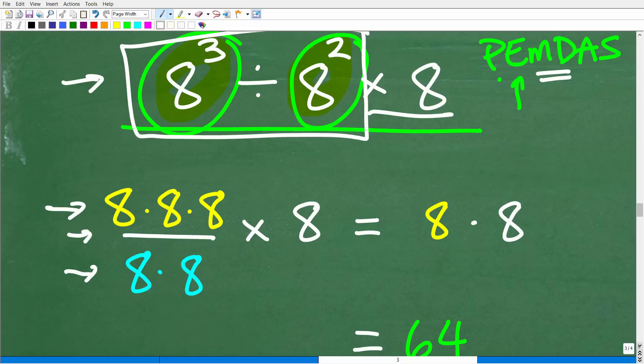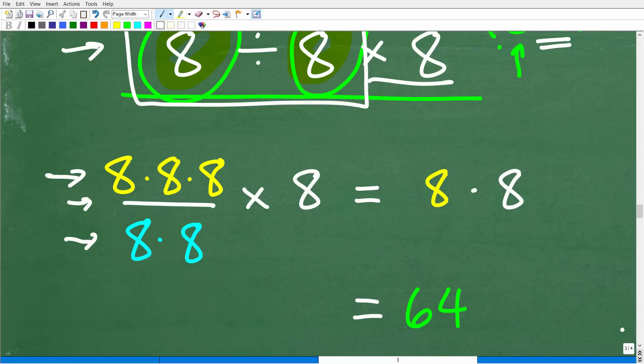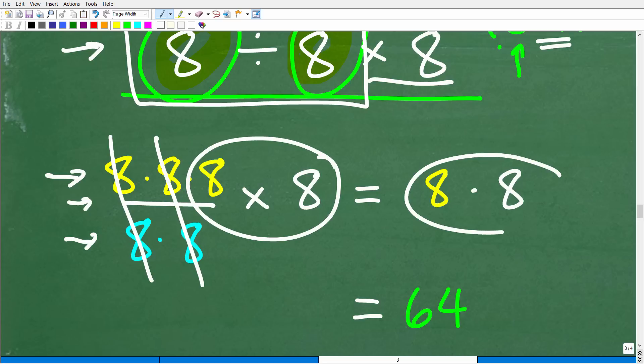So now this is very easy to figure out without a calculator. All right, so all we have to do is cross-cancel these 8s. So we have like factors, right? So 8, this 8 up in the numerator can cross-cancel with this 8. This 8 can cross-cancel with this 8. So we're left with 8 times 8. Of course, 8 times 8 is 64.